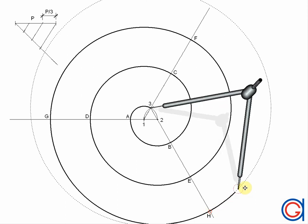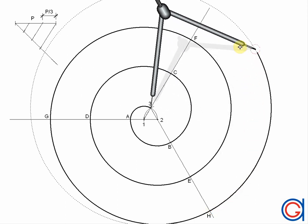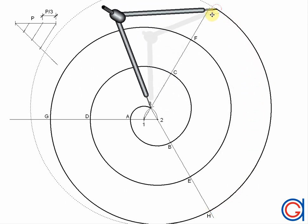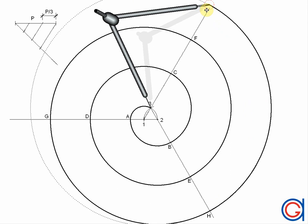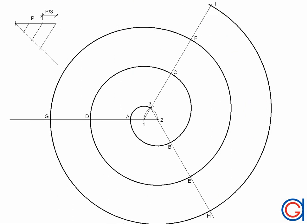So now we have our three-point center circle spiral given the distance P between the spiral branches. Thank you — I hope this video has helped you. Please press like or subscribe to our channel.